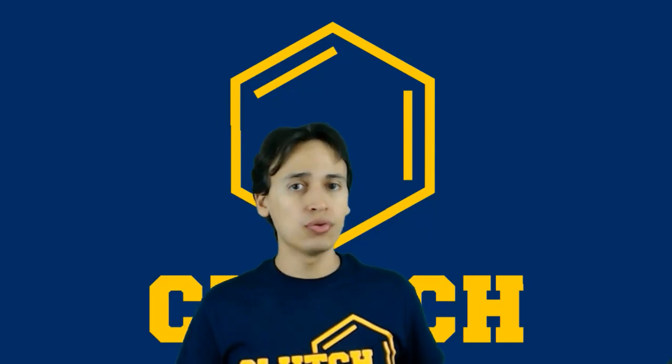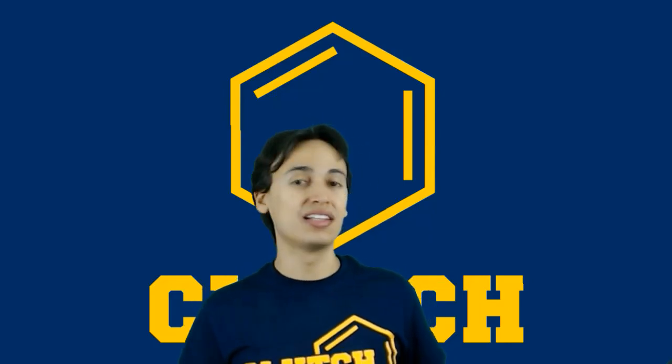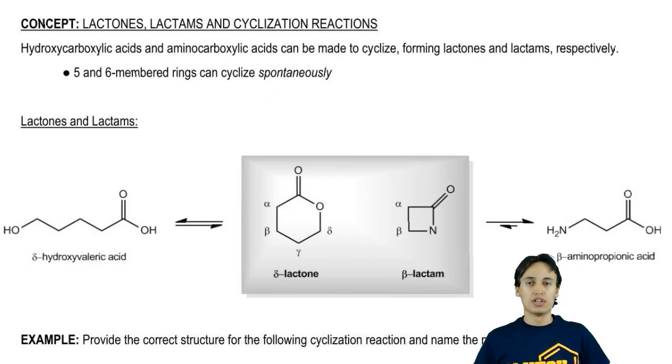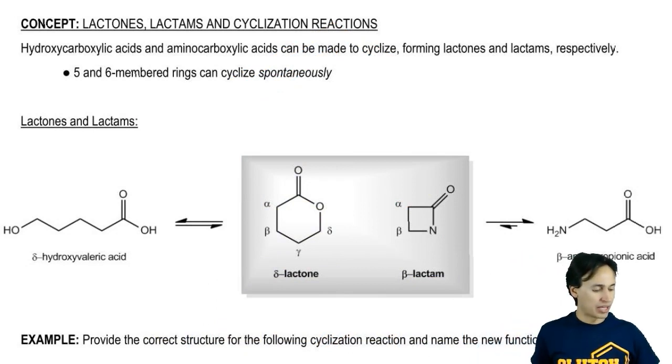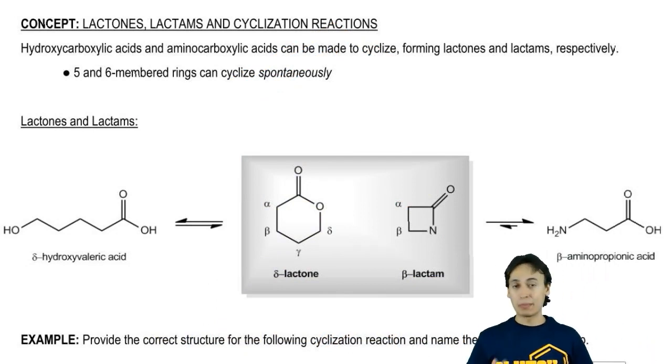Now I want to discuss lactones, lactams, and cyclization reactions. It turns out that esters and amides can be made to form rings. When you have a cyclic ester or a cyclic amide, these molecules have their own names that are very prevalent in organic chemistry and that you should be aware of.